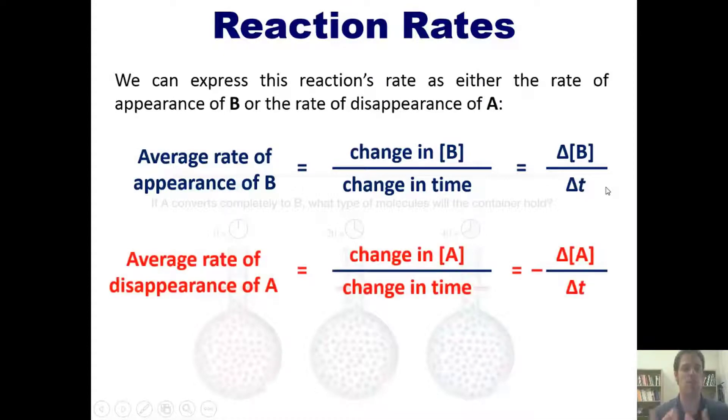Similarly, we could say that the average rate of disappearance of A is the change of the concentration of A over time, or negative delta concentration of A over delta T. Does that make sense? I hope so.